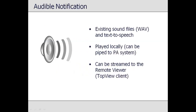Once an alarm has been detected and the message is created, Top View can deliver the information in a variety of formats. Audible alarms can be played through the sound device of the Top View computer. Top View can play a pre-existing sound file, or it can convert the alarm message to spoken words. In addition to hearing the sound locally, audible alarms can be streamed across the network to the remote viewer Top View client.